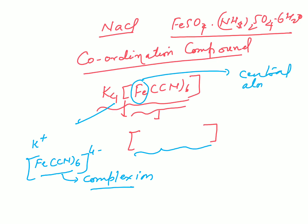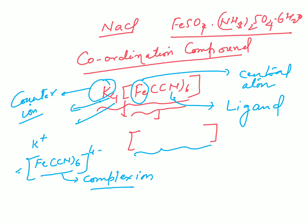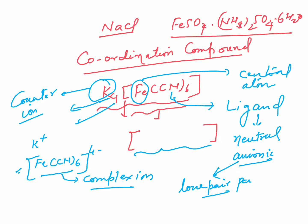All students will recognize that this is iron. The counter ion is outside the complex ion. If you want to write the name of a coordination compound, the most important requirement is that you identify the ligand. Let me explain again: a ligand is a neutral molecule or an anionic (negatively charged) molecule that donates a lone pair of electrons to the central metal atom, i.e., it forms a coordinate bond.